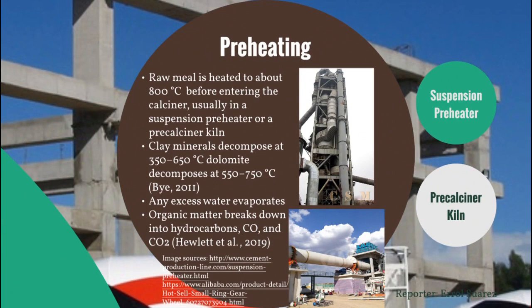The first unit process is preheating, where the raw meal is heated to about 800 degrees Celsius before entering the calciner, in order to save energy. This is considered a unit process since clay minerals decompose here, as does dolomite. Any present water is also evaporated here, which is particularly important for wet-process cement. Since limestone is a sedimentary rock, some organic matter may be present and is also broken down in the preheater. The product may contain hydrocarbons, some of which can combust into CO and CO2, resulting in regulations on organic matter and CO emissions.